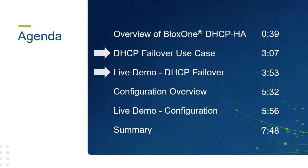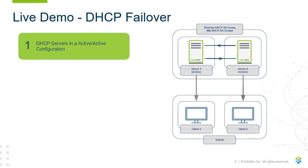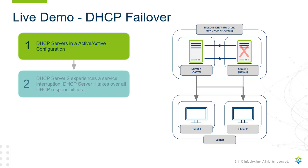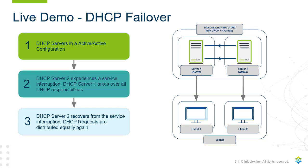Now let's take a look at a use case for this feature. Two example DHCP servers will be shown in a High Availability group called My DHCP HA Group. These servers are in an active-active configuration, distributing DHCP requests equally. Then Server 2 experiences a service outage. Due to being in an active-active configuration, Server 1 takes over all DHCP responsibilities from Server 2. After a brief period of time, Server 2 recovers from the outage and resumes serving the DHCP service in the High Availability group, equally distributing DHCP requests between Server 1 and Server 2 again.